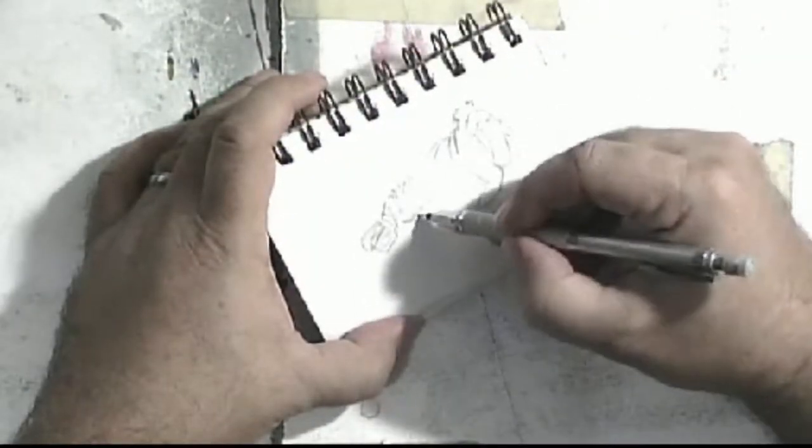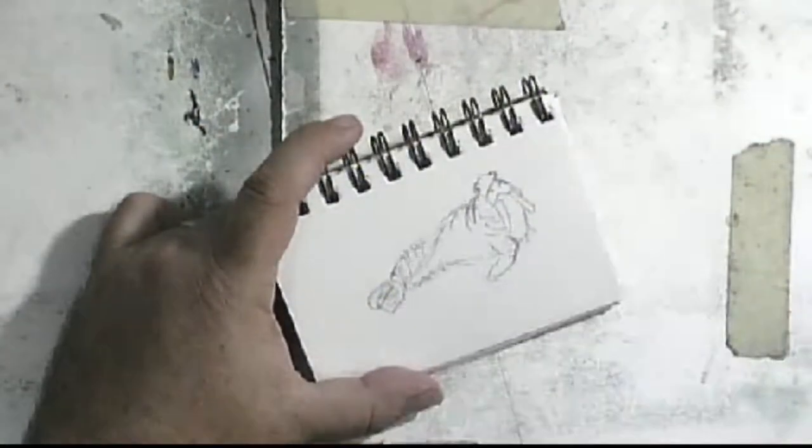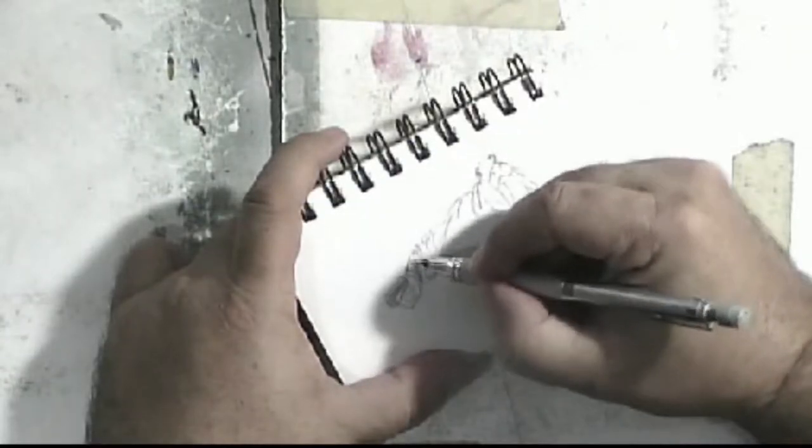This species is subdivided into two subspecies: the Atlantic walrus, which lives in the Atlantic Ocean, and the Pacific walrus, which lives in the Pacific Ocean.